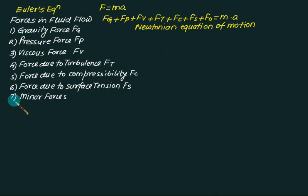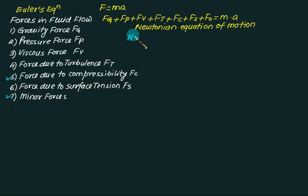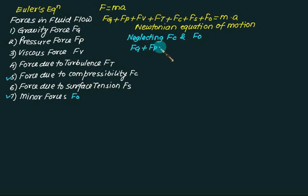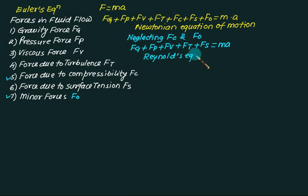The solution to the full Newtonian equation is very complex. So if we neglect the force due to compressibility and the minor forces, the governing equation becomes: Fg plus Fp plus Fv plus Ft plus Fs equals ma. This simpler equation is called the Reynolds equation of motion.